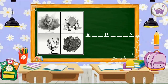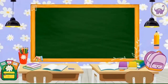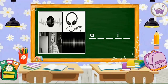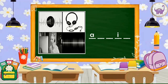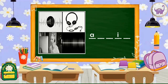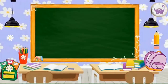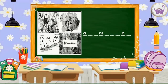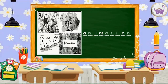Time's up. The answer is 'graphics.' Next is number three. Your time is up. What do they have in common? Each picture has something to do with sound or music, so the answer is 'audio.' Number four. Time's up. The answer is 'animation.'